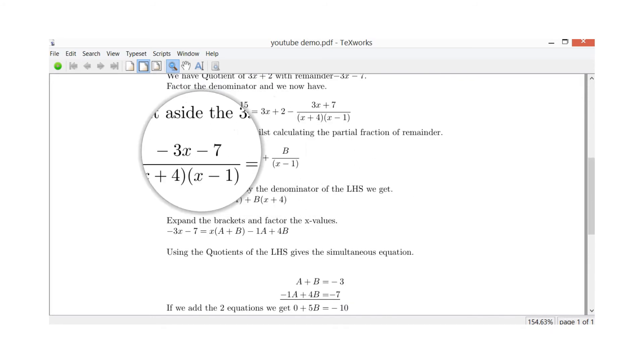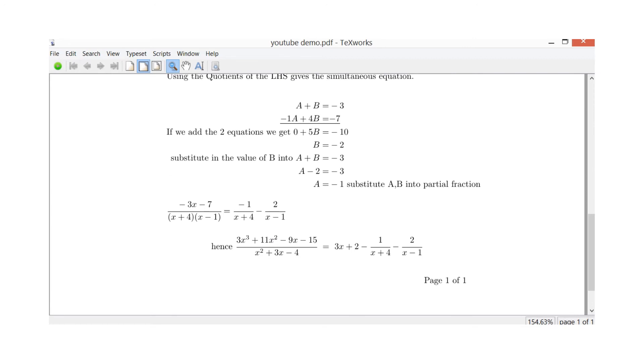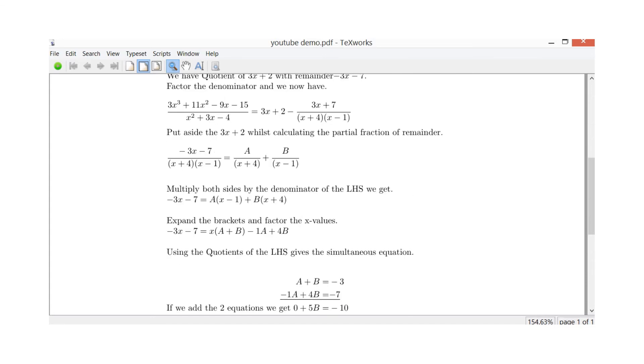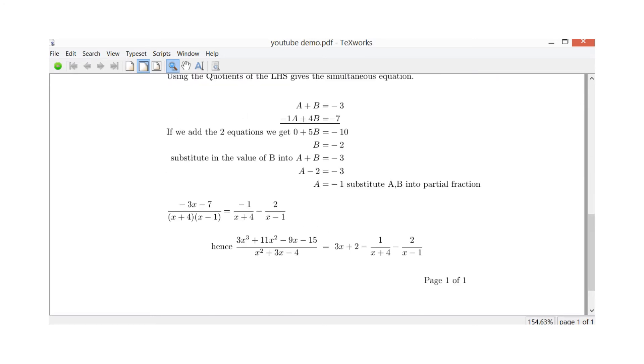So we've got our partial fractions values for A and B. So minus 3x minus 7 divided by x plus 4 x minus 1 equals minus 1 divided by x plus 4. That's our A value. And then minus 2 divided by x minus 1. So therefore we've solved that 3x cubed plus 11x squared minus 9x minus 15 divided by x squared plus 3x minus 4 equals 3x plus 2 minus 1 divided by x plus 4 minus 2 divided by x minus 1.